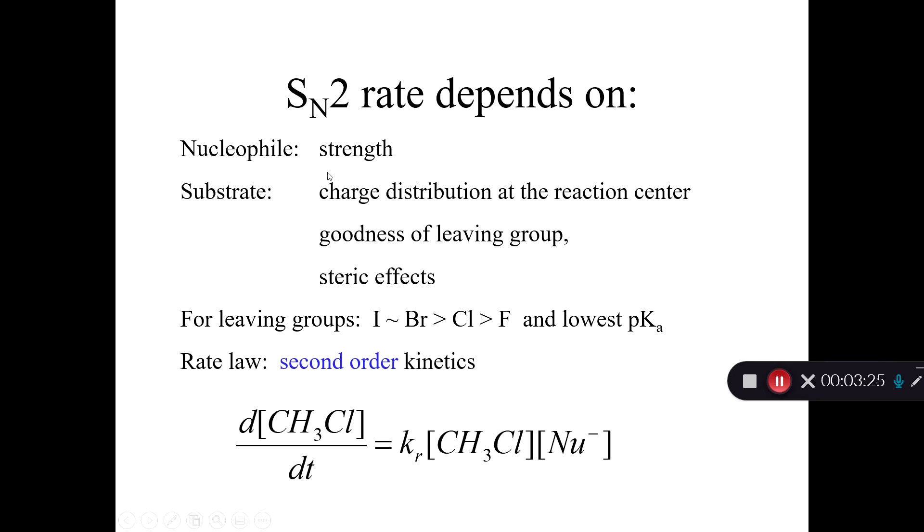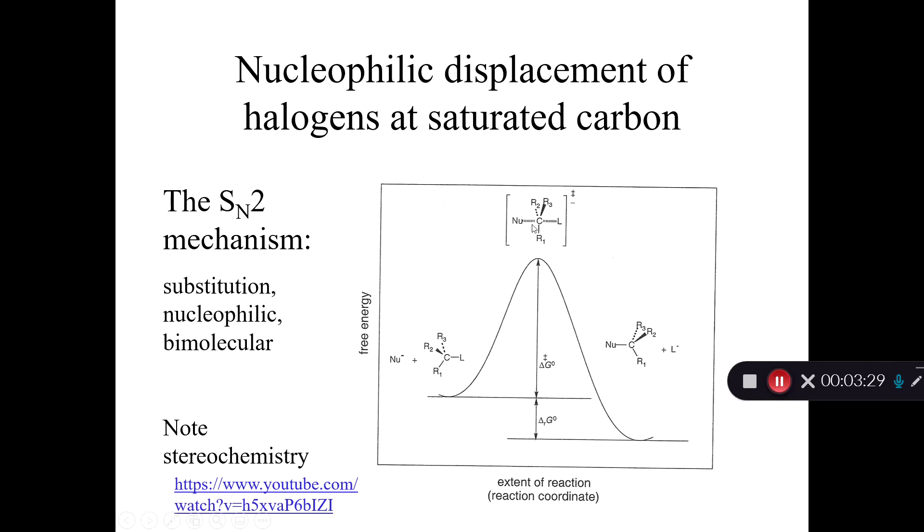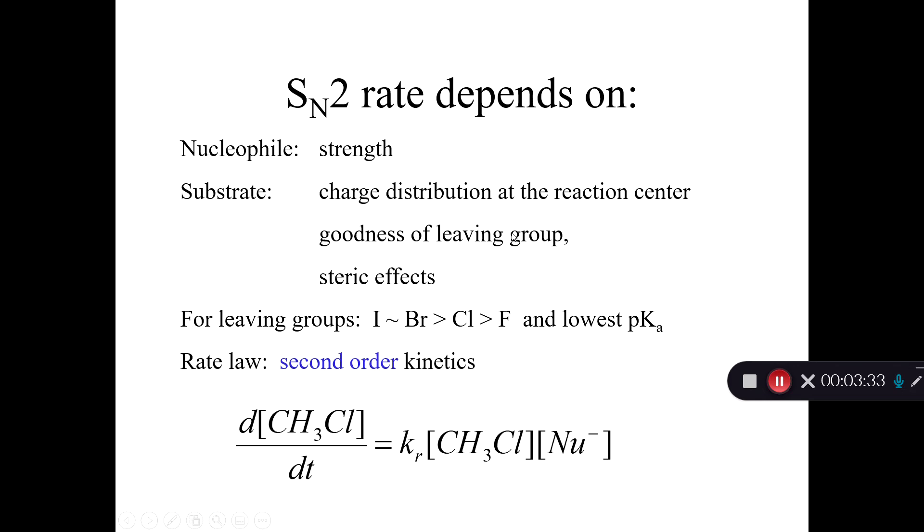And so the SN2 rate is going to depend on the strength of the nucleophile, because the nucleophile is involved here in the intermediate, in the transition state. It depends on the charge distribution at the reaction center. It depends on how good the leaving group is, whether it's happy to leave. And it depends on steric effects because that pentacoordinated thing is very sterically crowded. So for leaving groups in water, in the environment in water, iodine and bromide tend to be the best leaving groups. Chloride is a pretty good leaving group. And fluoride is actually not a very good leaving group in water. If you go look at Khan Academy or something online, it will give you a different order for leaving groups here. But that's because they're considering solvents other than water. Fluoride is very highly solvated by water molecules. And that's why it's not a very good leaving group. Because to leave, it's not solvated by water molecules when it's in the act of leaving. So it's very unstable and doesn't want to do that.